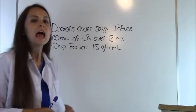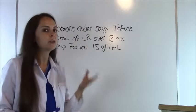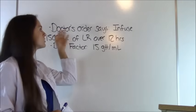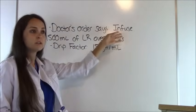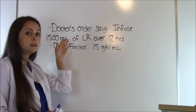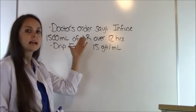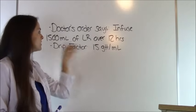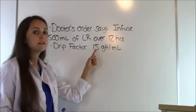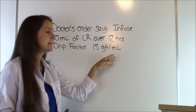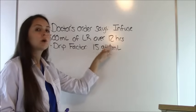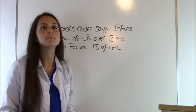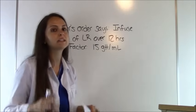Here's our first problem. In nursing school you'll be given a problem similar to this. The doctor's order says to infuse 1500 milliliters of LR — which is lactated ringers — over 12 hours with a drip factor of 15 drops per milliliter. GTT means drops. What you're wanting to solve for is drops per minute — that is where we're trying to get.